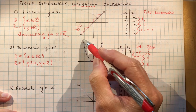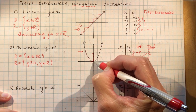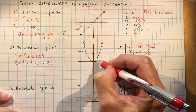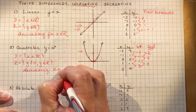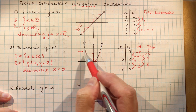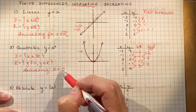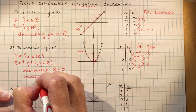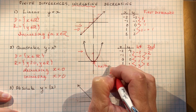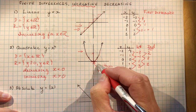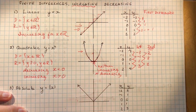For intervals of increase and decrease, I look at the function. As I read it from left to right, the function is going down until the vertex, where it's neither going up nor down, and then past that it's going up. So it's decreasing for x less than 0. At x = 0 it's neither increasing nor decreasing — check with your teacher, as some teachers don't understand this concept. It's increasing for x greater than 0. I can't include 0 in my increasing or decreasing intervals.